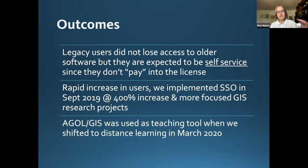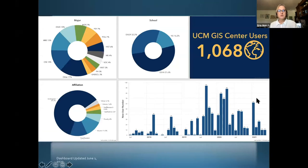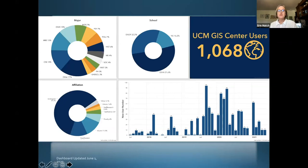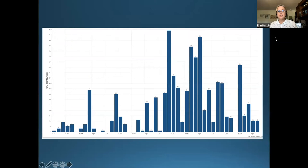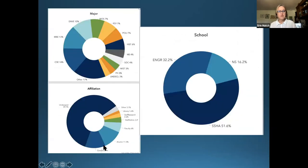When COVID hit, ArcGIS Online saw a spike in use as a teaching tool when we shifted to distance learning. My dashboard shows up to June 1st: we have over 1,000 users, most of them active — a legitimate increase from 200 users in September 2019. We broke it down by major, inspired by Peter Newp and Esri to look at how usage is distributed. September 2019 is the biggest bar; many spikes were automated from adding groups for workshops. We now have pretty steady growth in our user base.